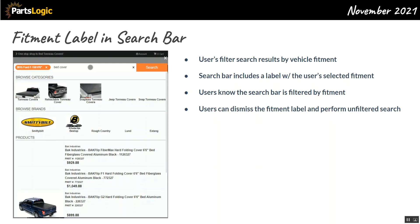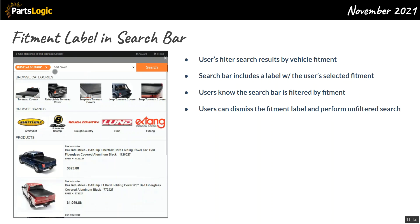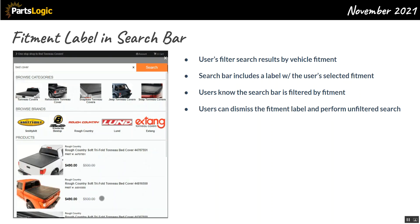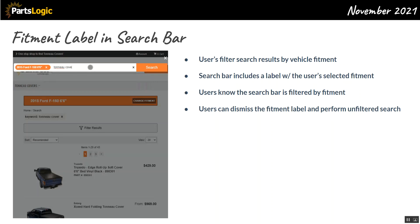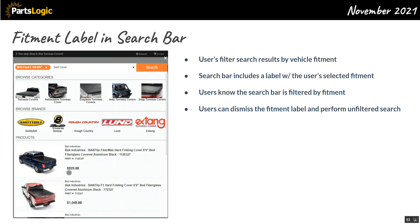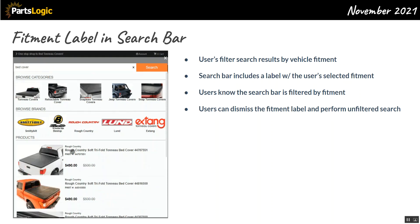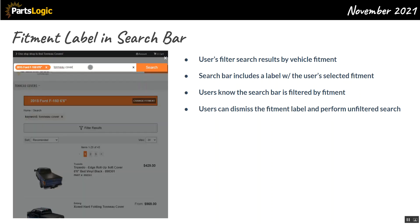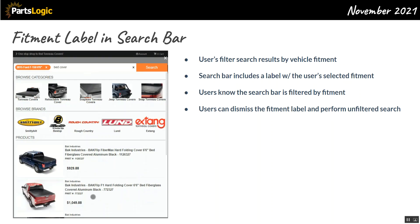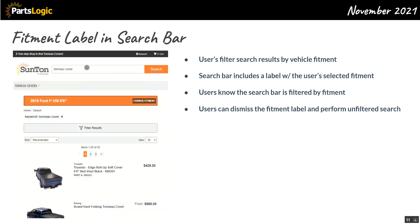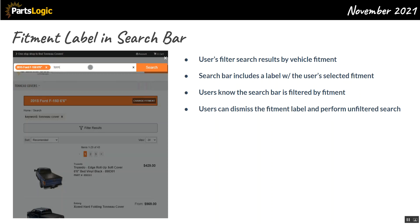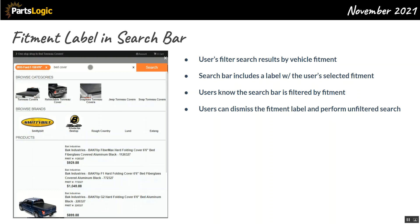In the example on screen, you'll see the search bar with an orange label on the left-hand side showing the user's selected fitment. As a user filters search results by vehicle fitment and then wants to do another keyword search — say, looking for bed covers, then fender flares or nerf bars — that search bar will include the orange fitment label in the top left, telling the user that the new search will be filtered by their chosen fitment.